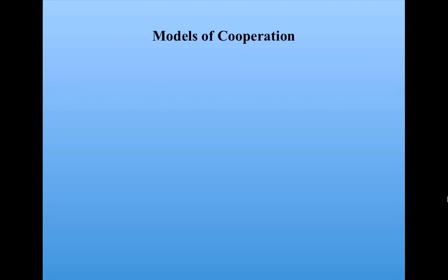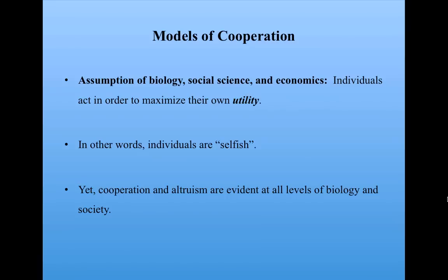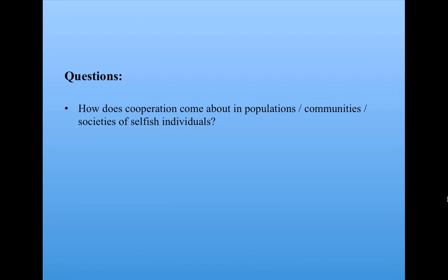The existence of cooperation is often a mystery in biology and in the social sciences. The main assumption of natural selection and much of social and economic theory is that individuals act in order to maximize their own so-called utility, which might mean their reproductive success, their profit, their happiness, or what have you. In short, individuals are assumed to be selfish, and yet the phenomena of cooperation and even altruism are evident at all levels of biology and in society. How does this come about? How is it that cooperation comes about in biological populations and communities and societies of selfish individuals? And how does it persist? Finally, how can we create conditions to make it happen?